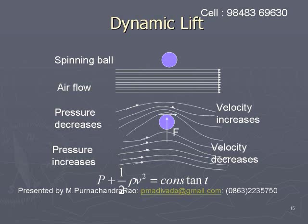From Bernoulli's principle, when the fluid is flowing horizontally, the relation is P plus half rho v squared equals constant. If the speed increases, the pressure decreases; if the speed decreases, the pressure increases. So on the top of the ball the speed is increasing, hence the pressure decreases on the top. At the bottom of the ball the speed decreases, hence the pressure increases. So there will be an increase in pressure at the bottom and a decrease in pressure at the top of the ball.